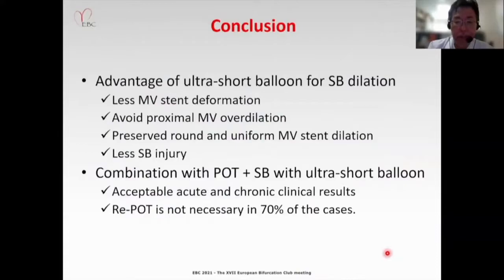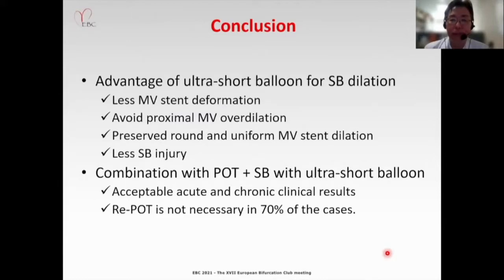In conclusion, the advantages of the ultra-short balloon for side branch dilation are: less main vessel stent deformation, avoiding proximal main vessel over-dilation, preserved round and uniform main vessel stent dilation, and less side branch injury. Combination of POT plus side branch dilation with ultra-short balloon in clinical study demonstrated acceptable acute and chronic results, and re-POT was not necessary in 70% of cases.